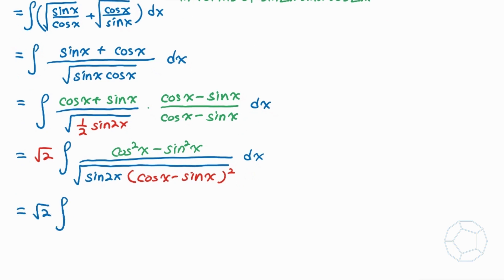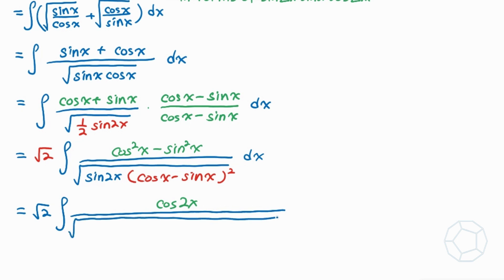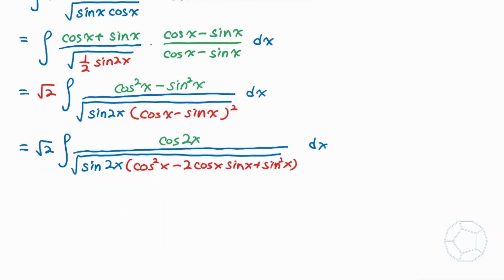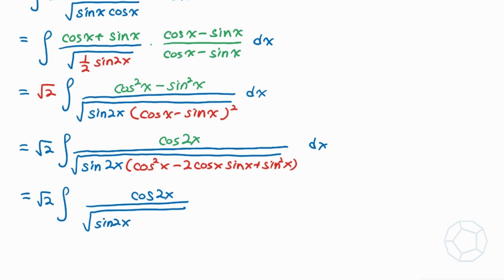In the next step, we have square root of 2 times the integral. For the numerator, we have cosine 2x. For the denominator, we have square root of sine 2x. Expanding the squared terms, we get cosine squared x minus 2 cosine x sine x plus sine squared x, dx. We're close to expressing the integrand in terms of sine 2x and cosine 2x only. Cosine squared x plus sine squared x equals 1, and 2 cosine x sine x equals sine 2x. So we obtain the desired form and are ready for substitution in Part 2.